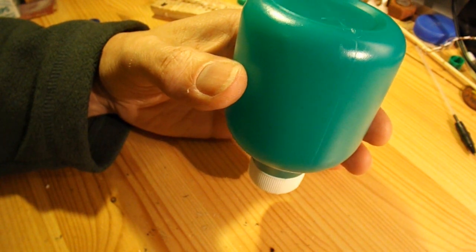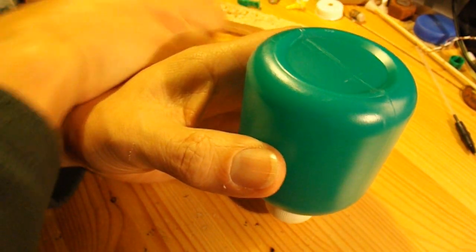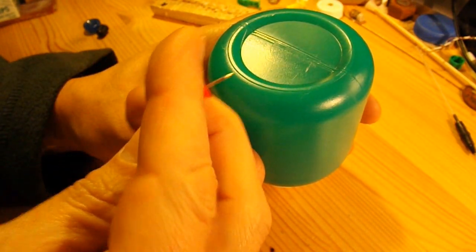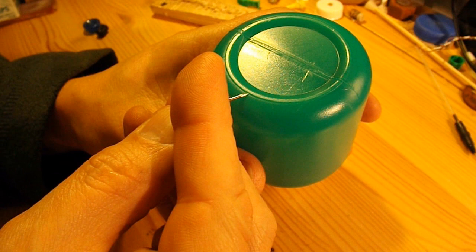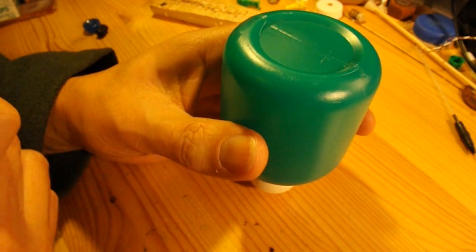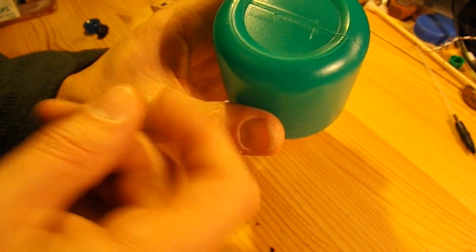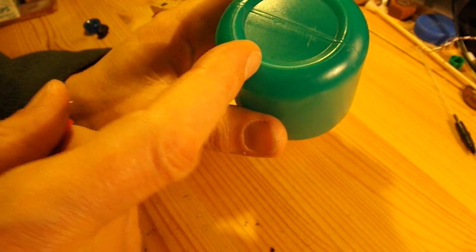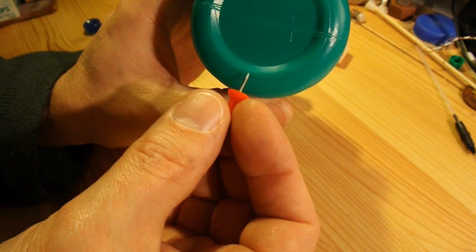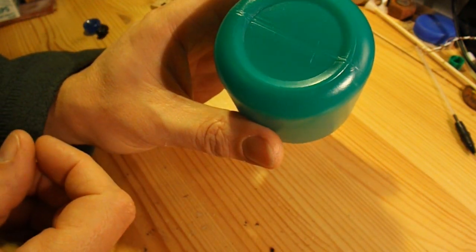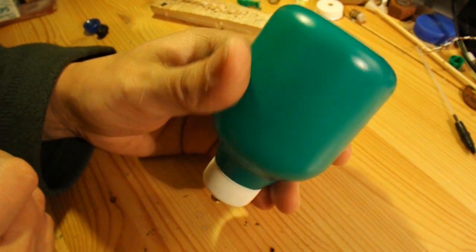When this has cooled down I shall get a paper clip and heat it up and push a little hole in the top here. Or the bottom as it really is. I'm going to use a hot paper clip to push the hole through and then it will be sealed with this. I'm not just going to push this through just in case it splits the plastic and we want this to be as strong as possible.